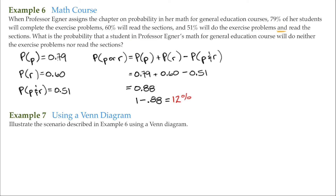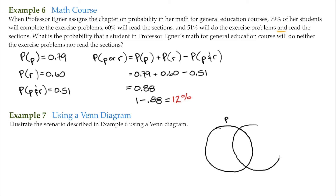I'm going to represent the first event — the probability that a student does the exercise problems — with a circle, and label this circle P. Then I'll draw another circle representing the other event, the probability that they read the sections, and label it R. Notice that the two circles overlap, because part of those who do the exercise problems also read the sections, and part of those who read the sections do the exercise problems.